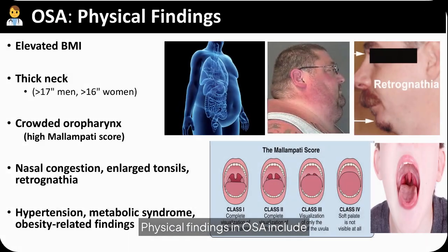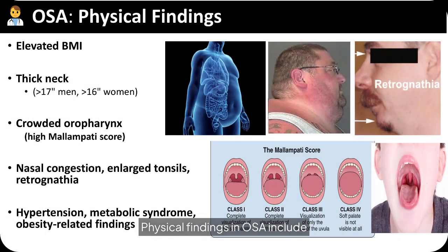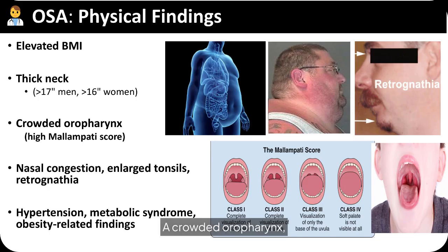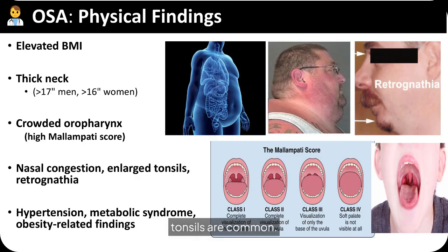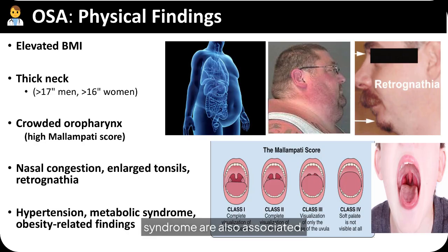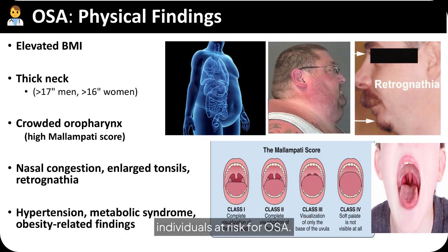Physical findings in OSA include elevated BMI and a thick neck. A crowded oropharynx, nasal congestion, and enlarged tonsils are common. Hypertension and metabolic syndrome are also associated. These findings help in identifying individuals at risk for OSA.